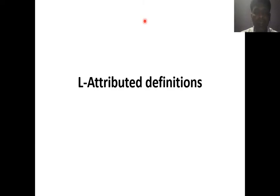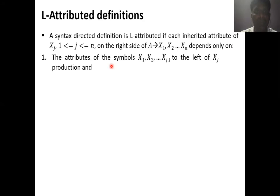The value of a synthesized attribute depends on the child node. When we combine the context-free grammar with attributes, such a definition is called a syntax directed definition. We call a syntax directed definition an L attribute definition if it contains inherited attributes. The syntax directed definition is an L attribute definition when each inherited attribute of Xj on the right-hand side depends only on the left-hand side variable A, or variables to the left of Xj in the production.